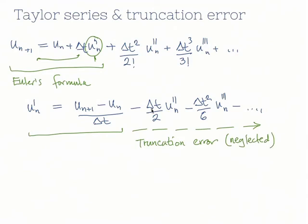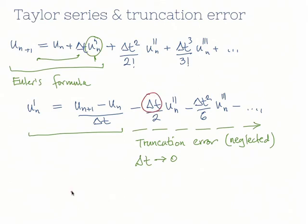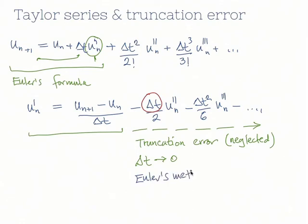You can see that the truncation error is small if delta t is small. The more you multiply by delta t, those terms get smaller and smaller. Delta t is smaller than 1, and delta t tends to 0, so all of these terms converge to 0. The approximation converges to the exact derivative as delta t tends to 0. The truncation error in this case is proportional to delta t, so we say that the truncation error in Euler's method is of order delta t.